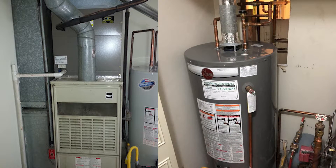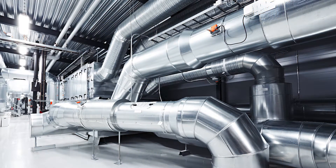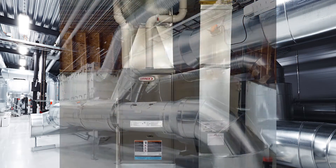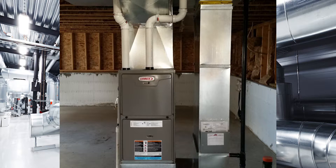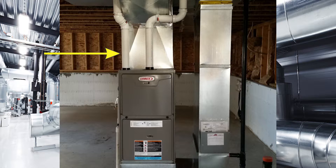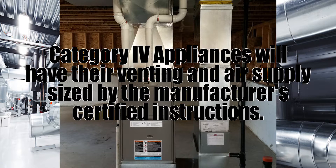Category one natural draft appliances are antique in nature and they are being phased out. We will see them in older buildings and they still exist quite widely with hot water tank installations today. The most common type of installation today is the category four or high-efficient furnace. These are generally direct vent, meaning they have their own exhaust vent and their own air intake vent, so they don't require air supply like we're going to talk about in this video. All that venting is installed by the official manufacturer's instructions.